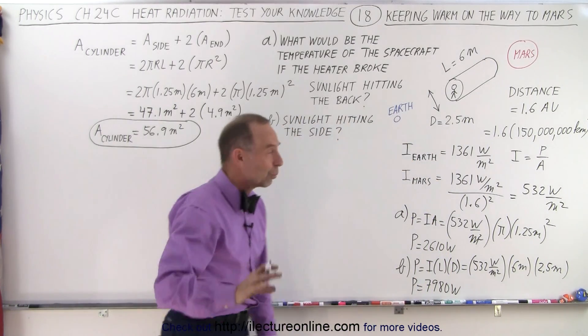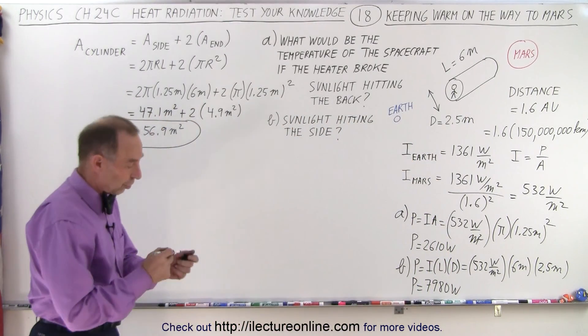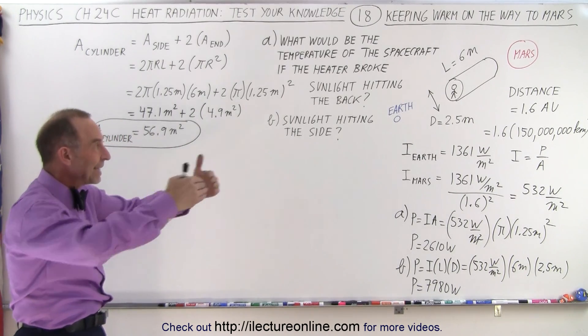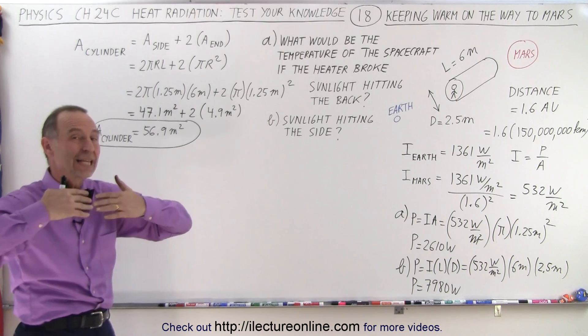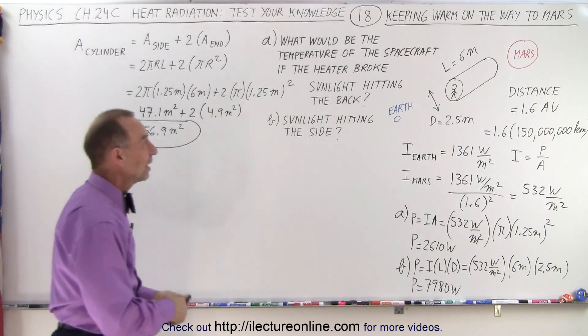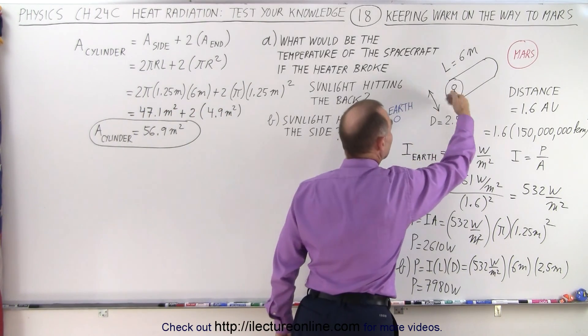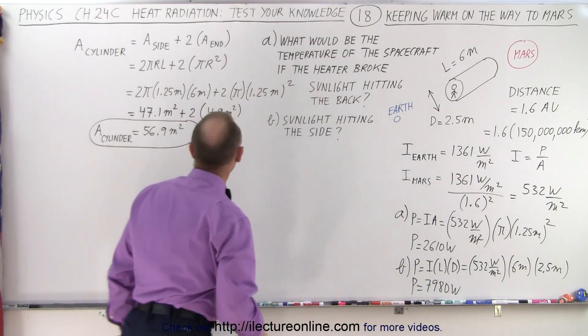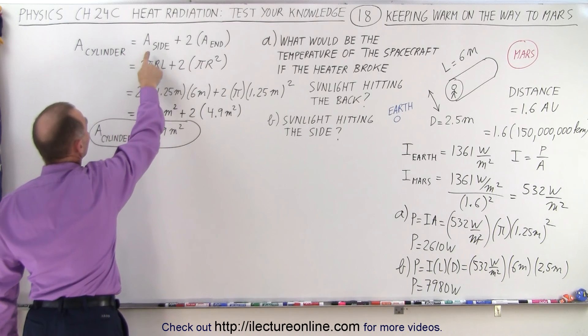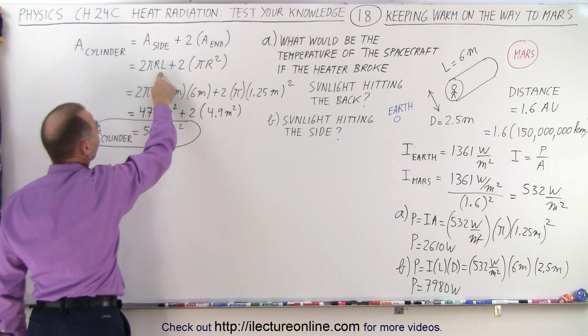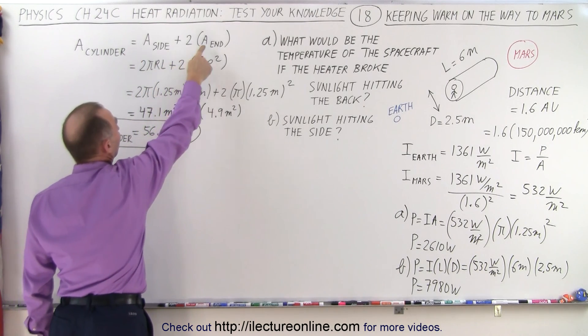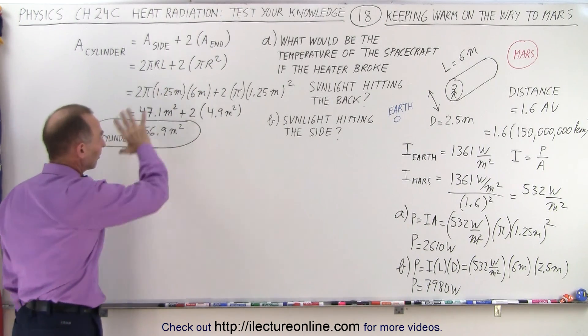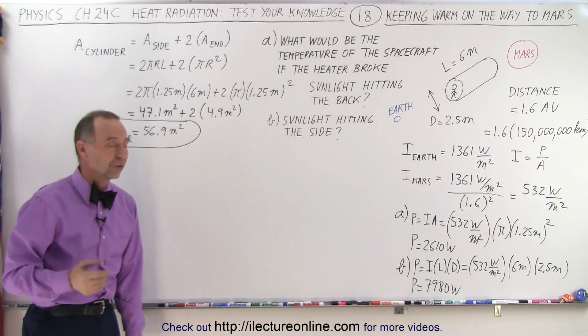So what would be the equilibrium temperature? Equilibrium temperature would be reached when we have a point where the amount of heat received from the sun equals the amount of heat being radiated by the spacecraft. Remember, the spacecraft will be radiating in all directions, forward, backwards, and around all the sides. For our convenience, we have the area of the cylinder being equal to the area of the side, which is 2 pi r times the length, plus twice the area of each end. And so it would be twice pi r squared, and here I've already calculated ahead of time what those areas are.